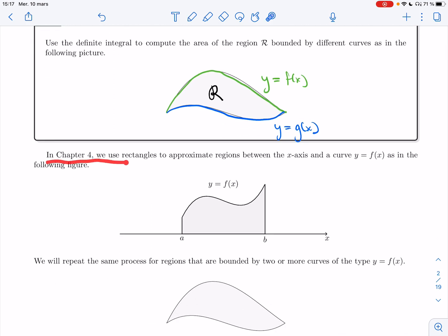So in Chapter 4, we used rectangles to approximate the area of the region between the x-axis. So in this case, the bottom curve was pretty simple. It's just y equals 0, and a curve, y equals f of x, as in the following figure.